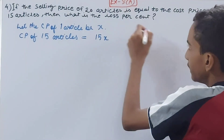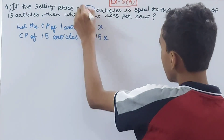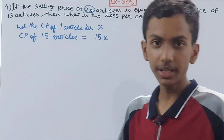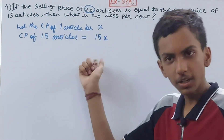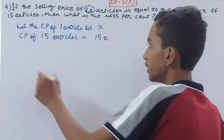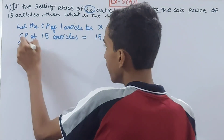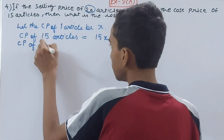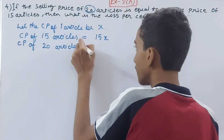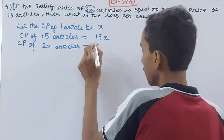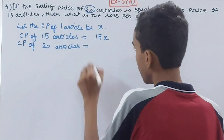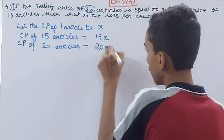In the question it is mentioned that selling price of 20 articles is equal to the cost price of 15 articles. So cost price of 15 articles I have, but we should also know the cost price of 20 articles. Although nowhere it is given in the question, cost price of 20 articles should be known — this will be 20x.